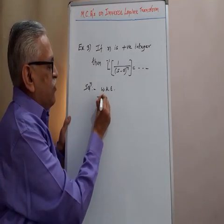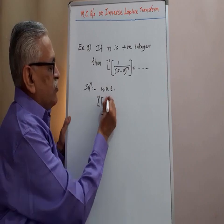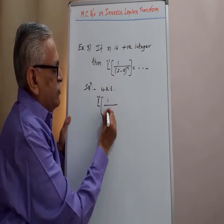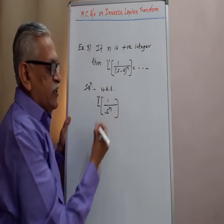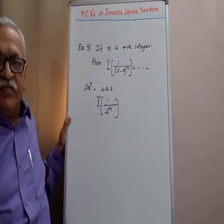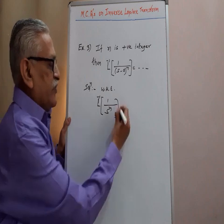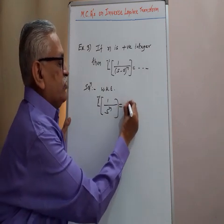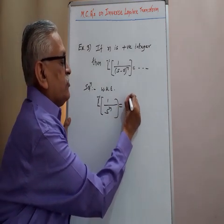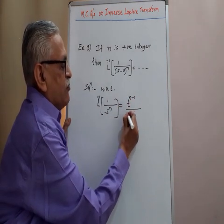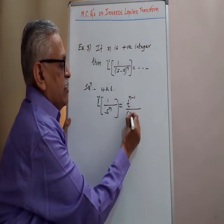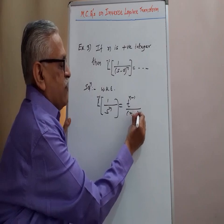The inverse Laplace of 1 by s raised to n, if n is a positive integer, is equal to t raised to n minus 1 upon n minus 1 factorial.